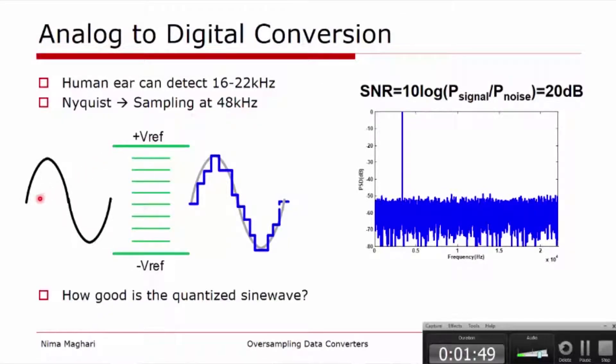Suppose we have this input sine wave and we feed it to this ADC which is a flash ADC, and each of these references is generated by an analog comparator. Now the output sine wave digitized would look something like this. And when we do this quantization we want to see how accurate our reconstructed sine wave would be.